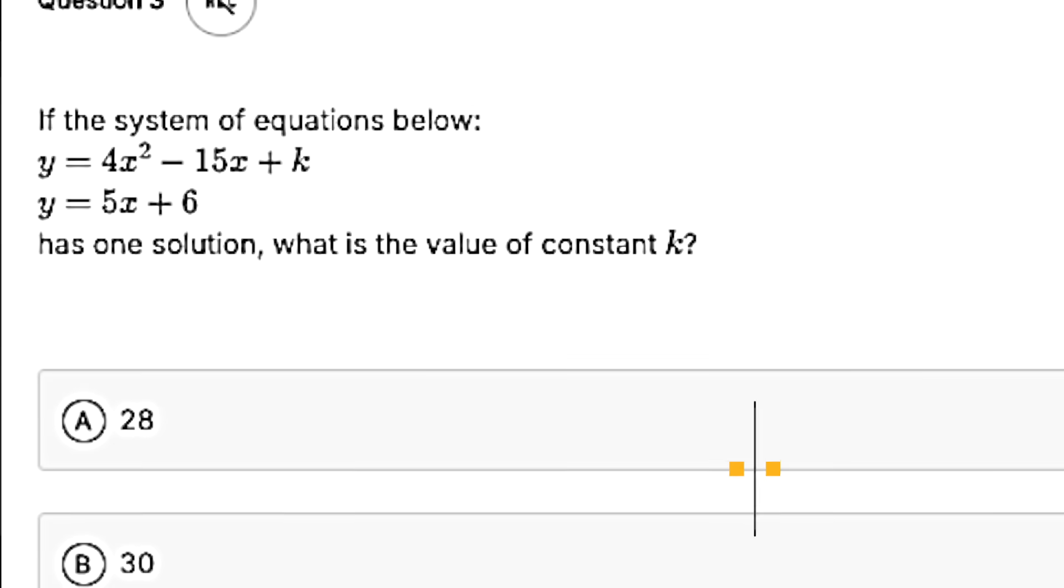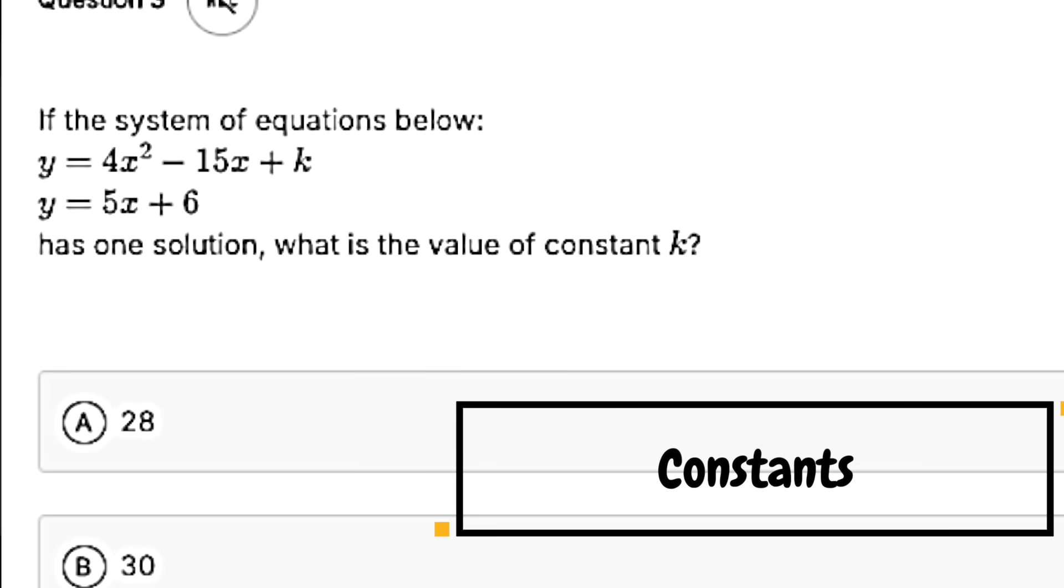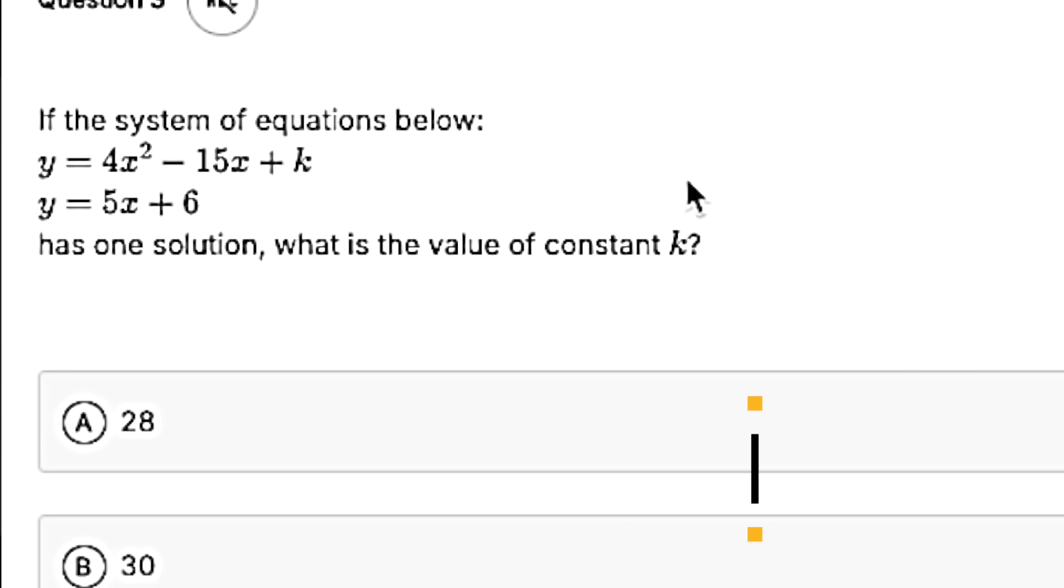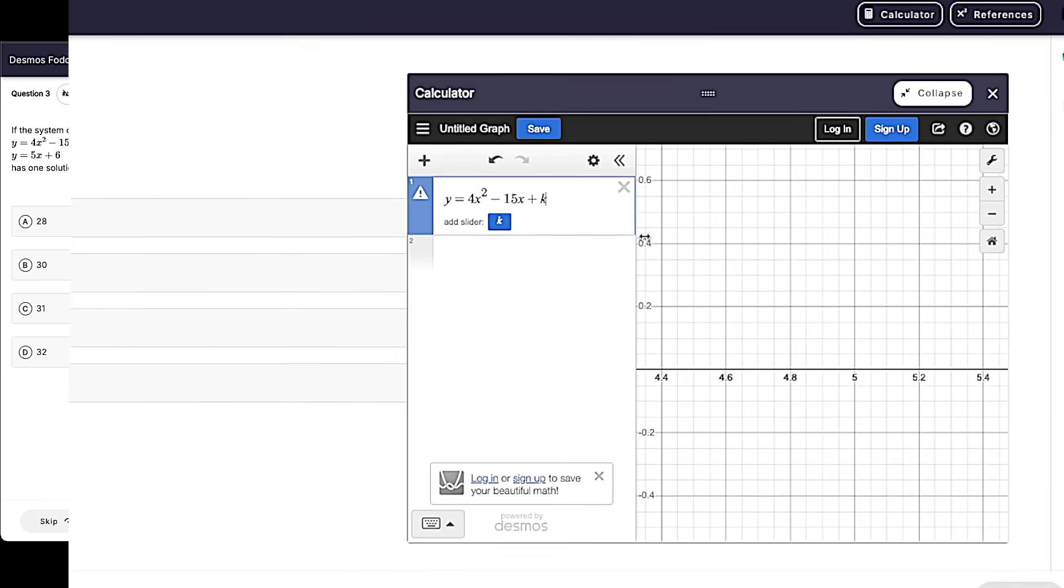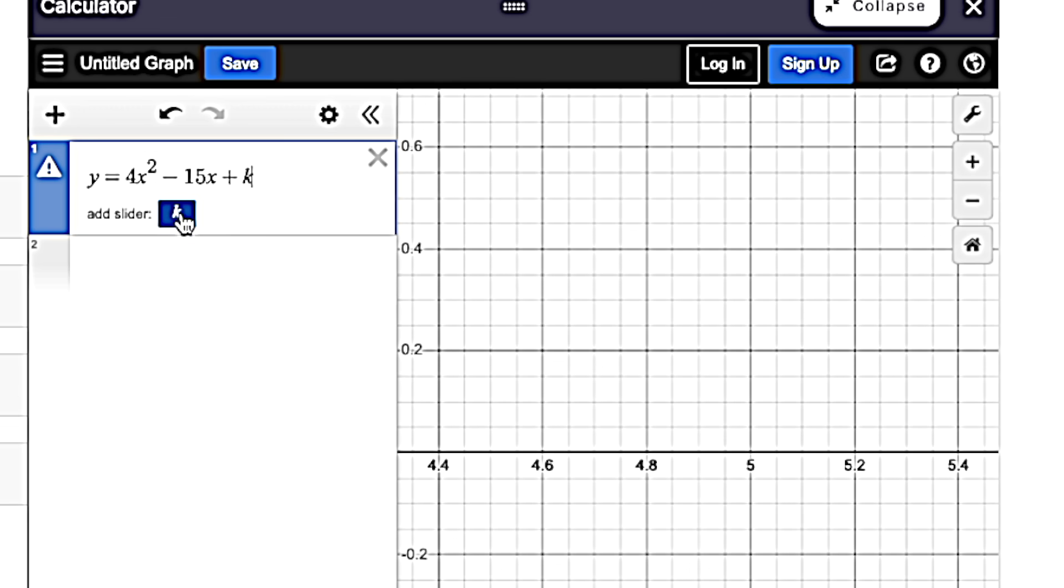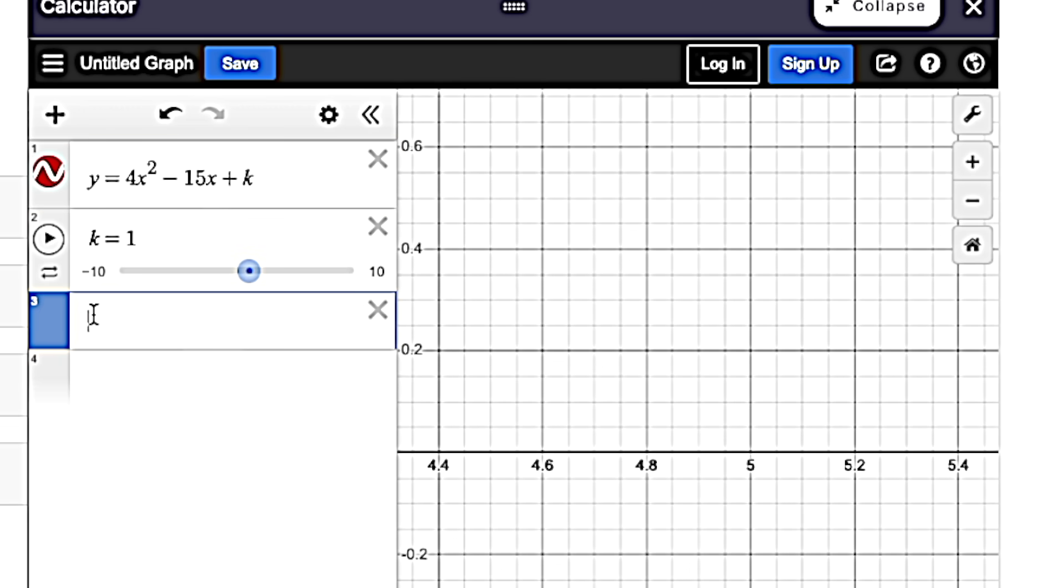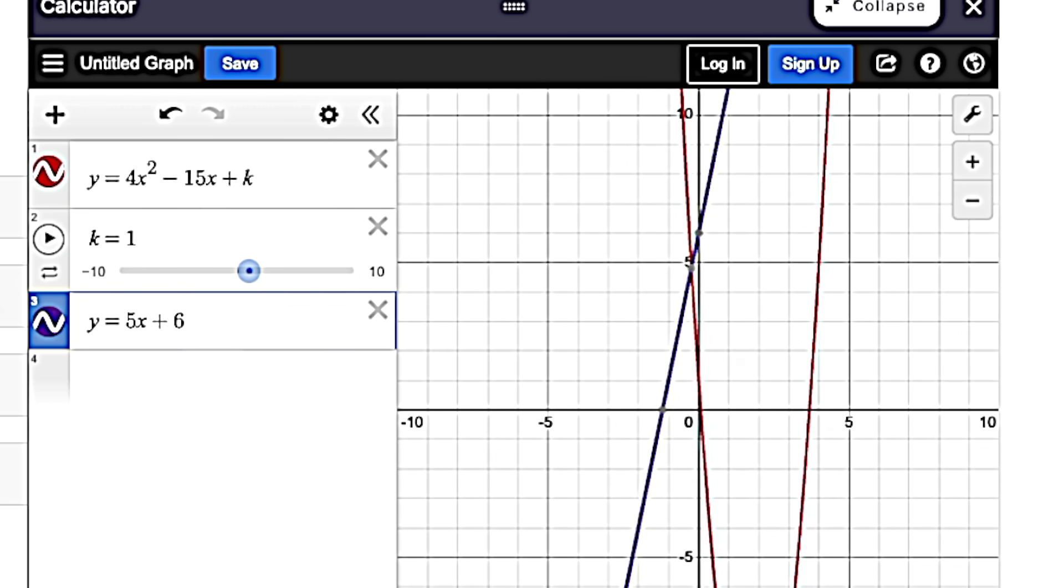You can use Desmos to solve a number of constants-based questions. Definitely a system of equations where you only have one constant, you can use Desmos. You are, of course, going to plug in both equations. When you put k in, whatever your constant is, in this case k, add the slider. If it doesn't show up for some reason, you can go on another line and just say k equals, and then put in any old number.